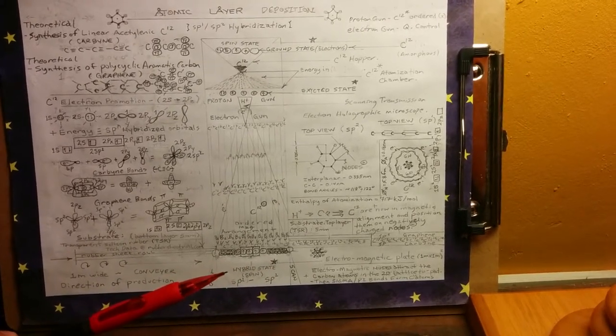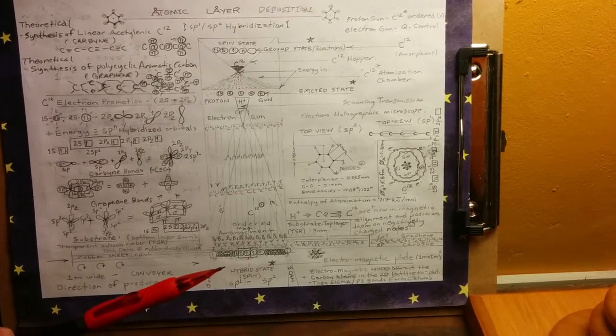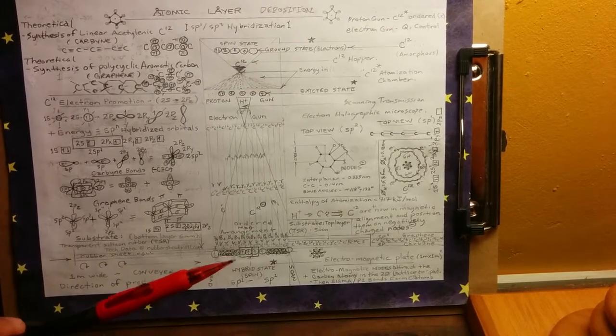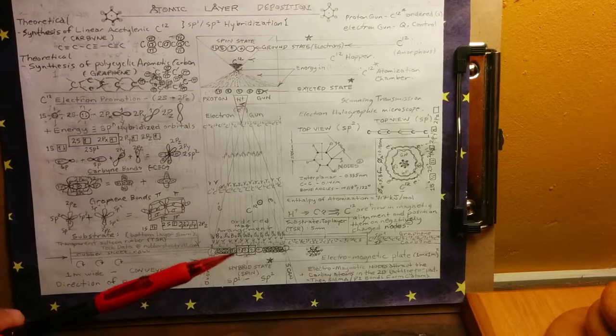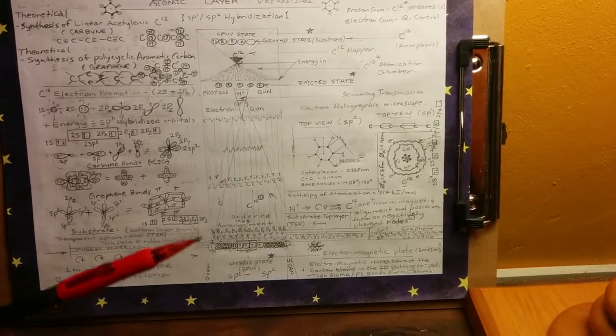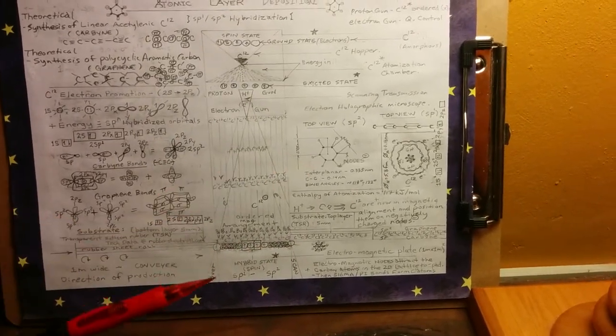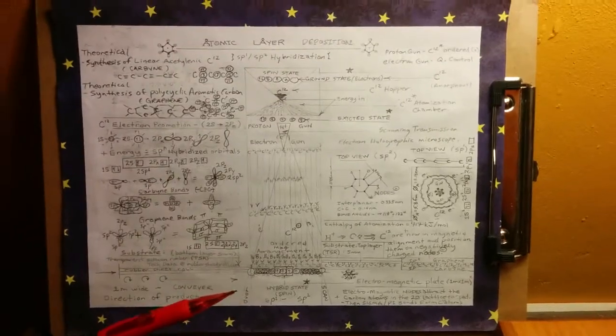Once they come down here, they hit their hybridized state, and then they can form the pi bonds and the sigma bonds, and then come off here in the hexagonal shape there. Thank you for watching.